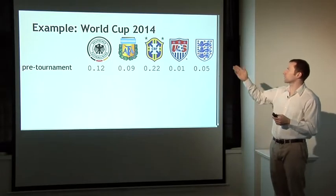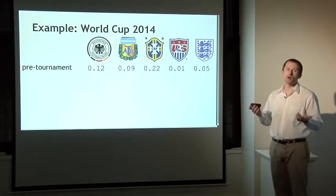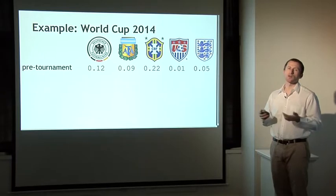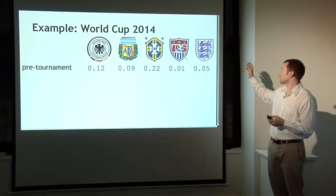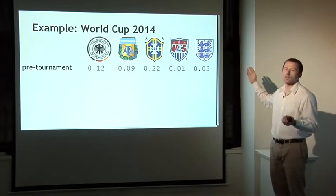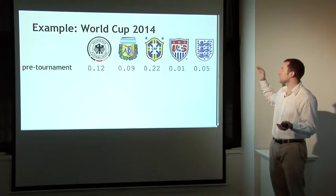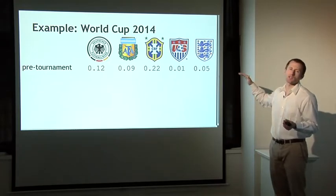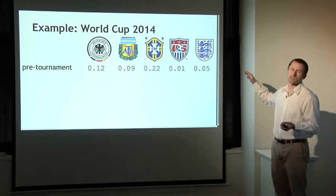Over on the left you can see Germany — their shares are trading for about 12 cents, which means the market thinks they have a 12% chance of winning. And so on for Argentina, Brazil, the US, and England over on the right, which the market gives about a 5% chance of winning. So that price the market assigns is equal to the probability that people believe that team has to win.